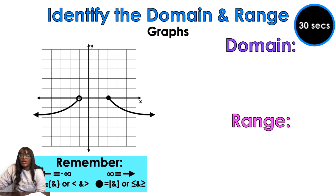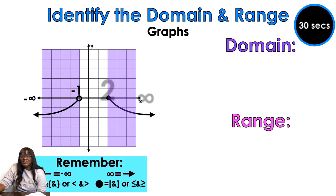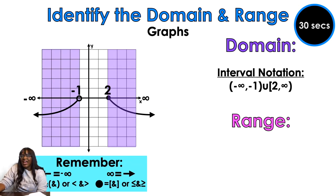Okay so this is a hard one. You've got to go from negative infinity to negative one, and then there's a gap, and you're going to go from two to positive infinity. So this is actually going to be a union. Check out the bracket on the two — I have negative infinity to negative one and it's an open circle at negative one, so I'm going to put parentheses in union with a bracket on the two.